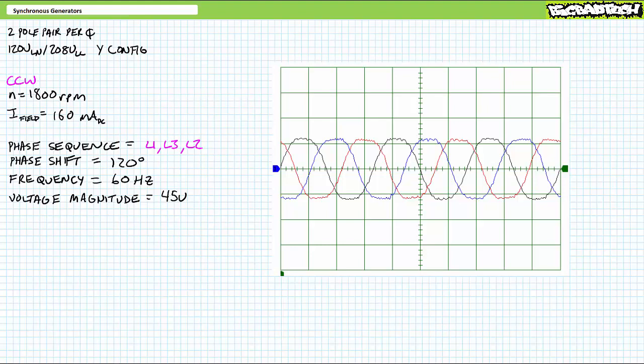Let's say we're trying to establish light industrial, 120 volts line to neutral, 208 volt line to line, 60 hertz, three phase AC with a 1, 2, 3 phase sequence. We're almost there. Let's take it all the way. Let's return prime mover rotational direction back to clockwise so we get our desired 1, 2, 3 phase sequence.